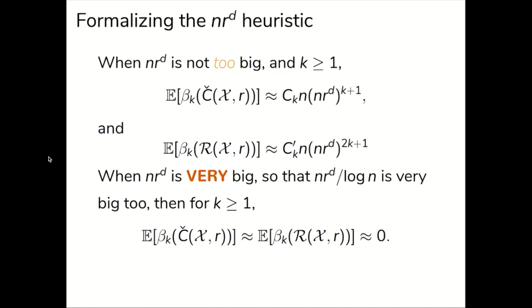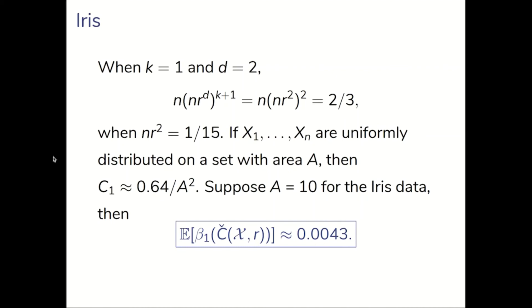We can now quantify that the iris data behaves like it's a random Čech complex. For example, when k is equal to 1 and d is equal to 2, n times nr to the d to the k plus 1 is equal to 2/3 when nr² is equal to 1/15. This is in the sparse case.